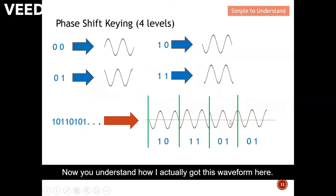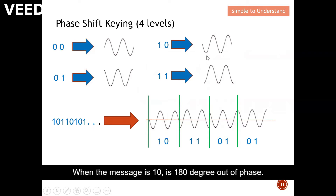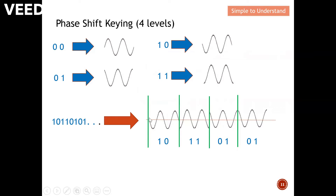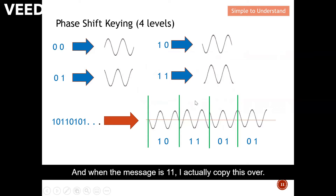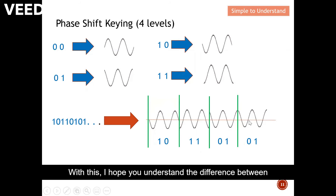Now you understand how I arrive at the four-level PSK waveform. When the message is 10, it is 180° out of phase — I copy that waveform. When the message is 11, it has a phase shift of 270°. When the message is 01, there is a phase shift of 90°, and similarly for the others.